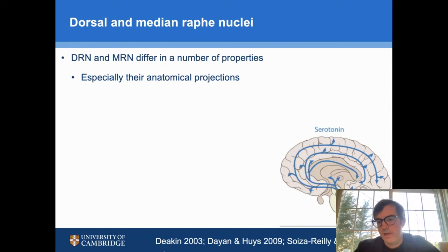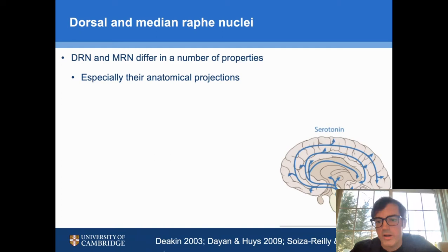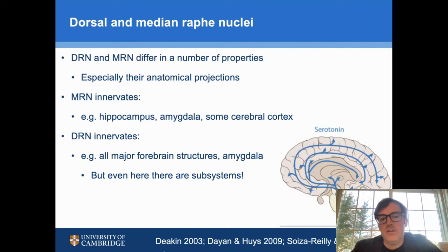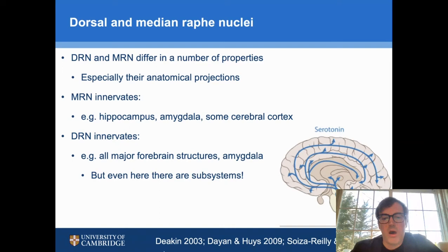The cell body originates in one of those blobs in the brainstem and then the axon projects elsewhere in the brain, indicated by blue lines with arrows. We know that the MRN — the median raphe nucleus — projects to the hippocampus, amygdala, and some parts of the cerebral cortex, whereas the DRN, or dorsal raphe, innervates all major forebrain structures — the upper part of the brain above the brainstem — as well as the amygdala. But even there, there are subsystems within the DRN.